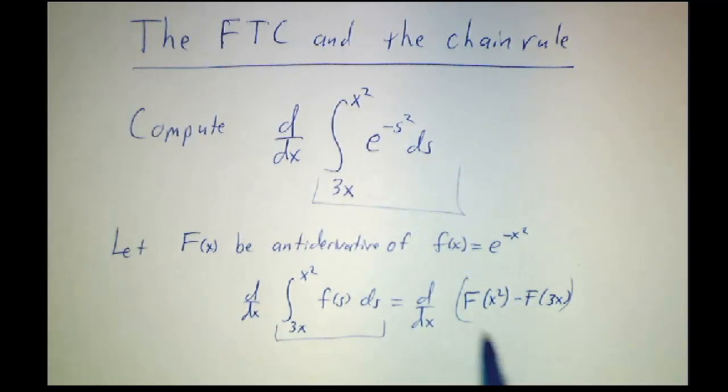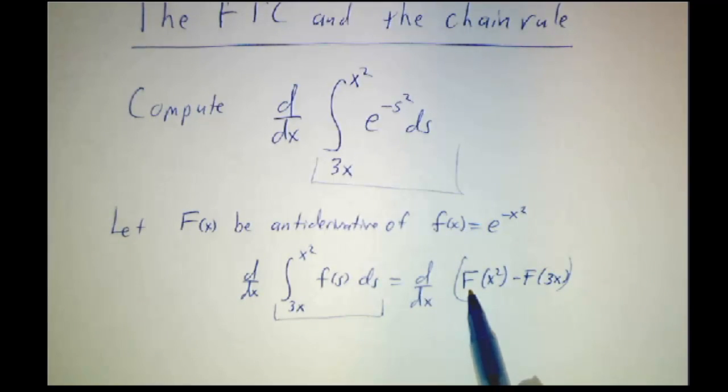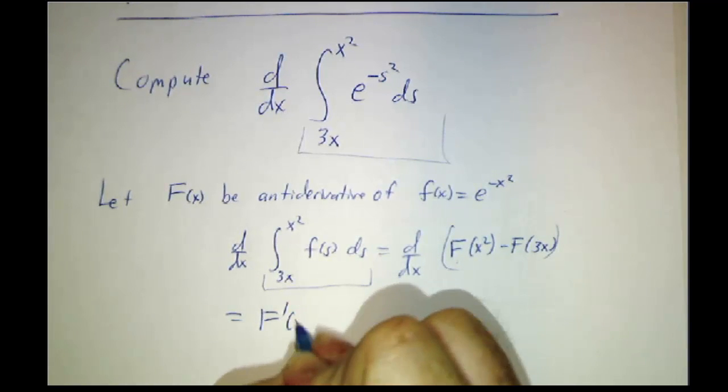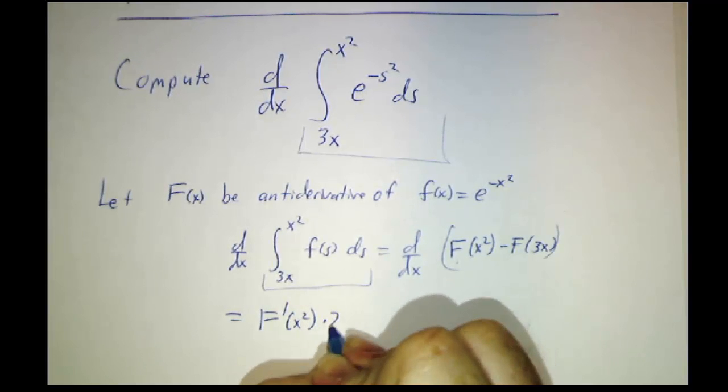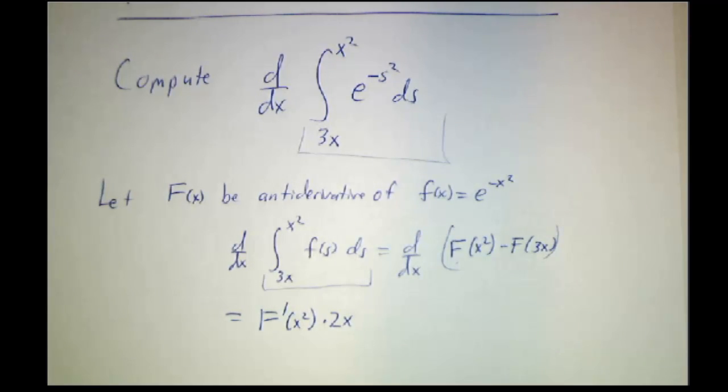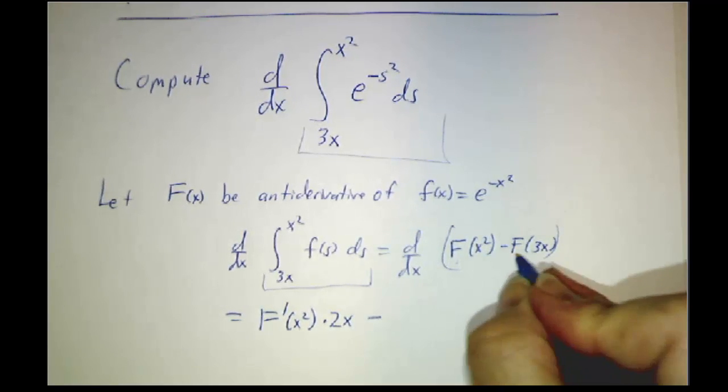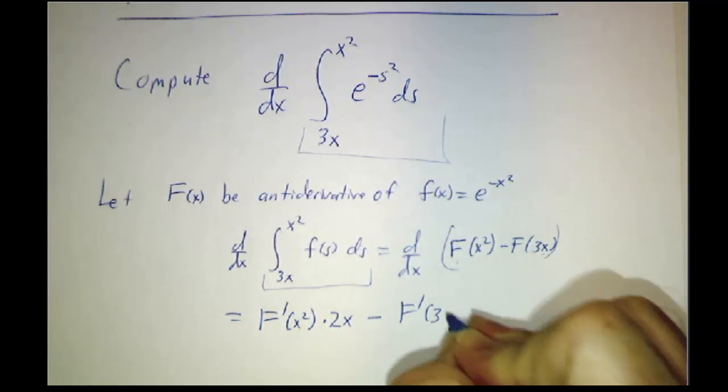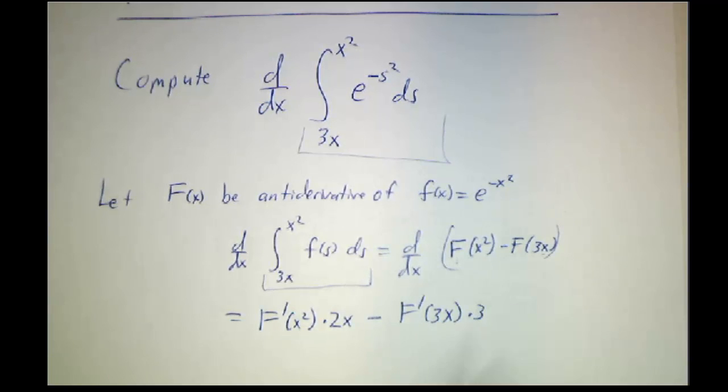Now, we don't happen to know a formula for big F, but that's okay because now we apply the chain rule. The way you take the derivative of big F of x-squared is you take f prime of x-squared times the derivative of x-squared. And the derivative of big F of 3x is f prime of 3x times 3.